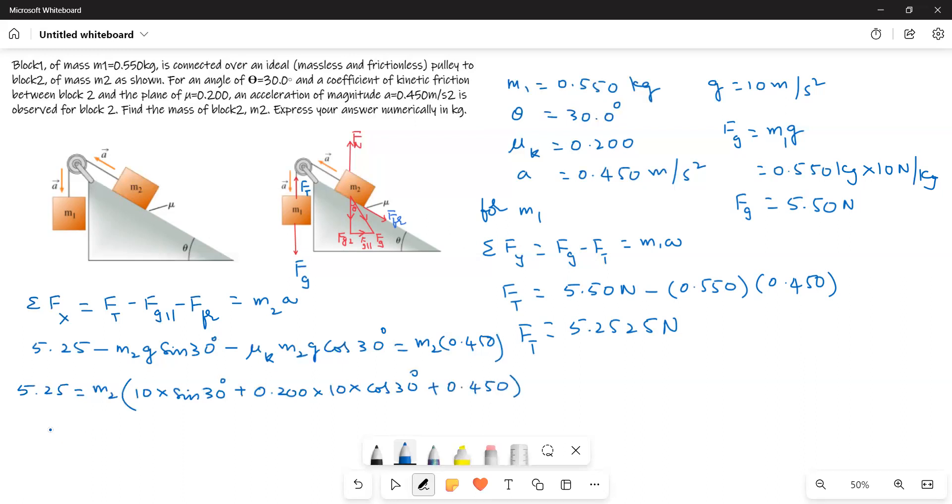On solving we will get M2 is equal to 0.731 kilograms. That is the answer for this question. Okay, here what we are doing is just we are writing the force equation and then equating them we will get the answer. Just writing the force equation, that's all. Drawing the free body diagram and writing the force equation we get the answer.